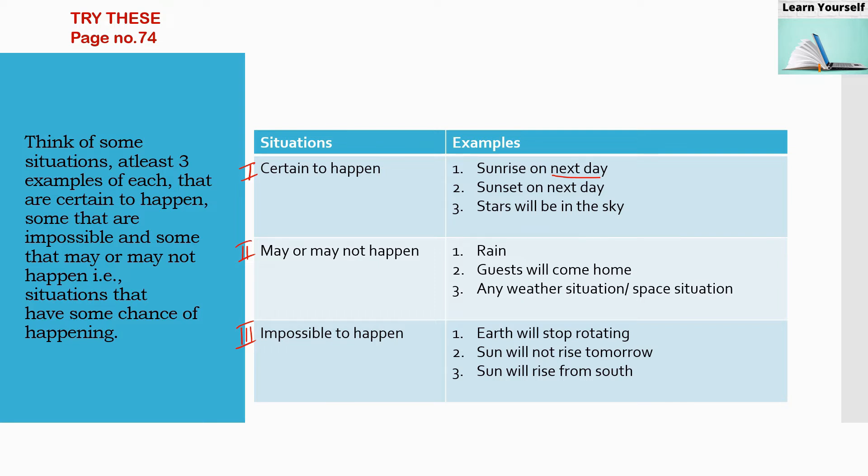Second type of situations we are listing here are may or may not happen. It may happen or it may not happen. So first is it is going to rain tomorrow or it is going to rain in the evening. Guests will come home in the evening or guests are going to come tomorrow or something like that.